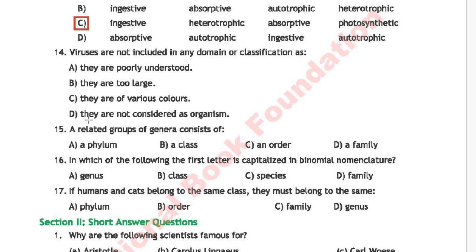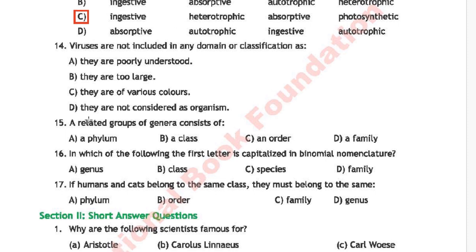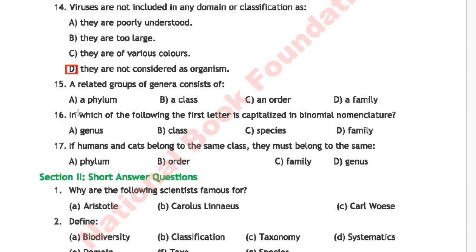Question 11: Viruses are not included in any domain or classification because — option A is they are poorly understood, option B is they are too large, option C is they are of various colors, option D is they are not considered as organisms. The correct answer is option D — they are not considered as organisms.